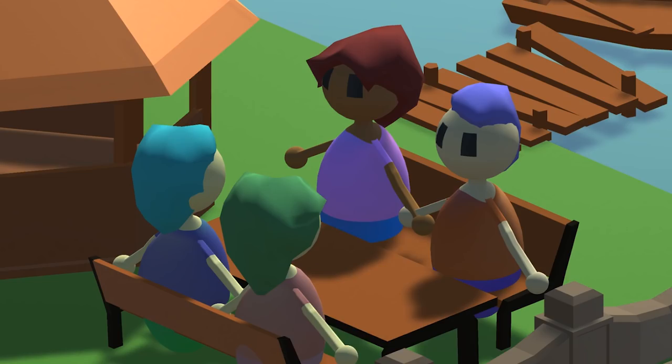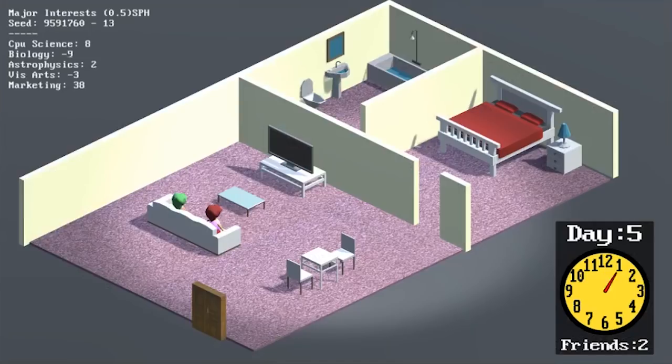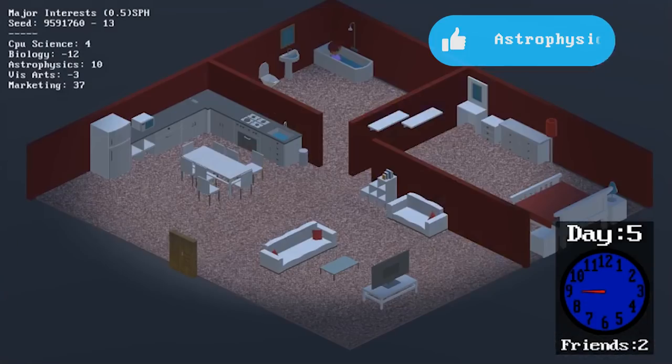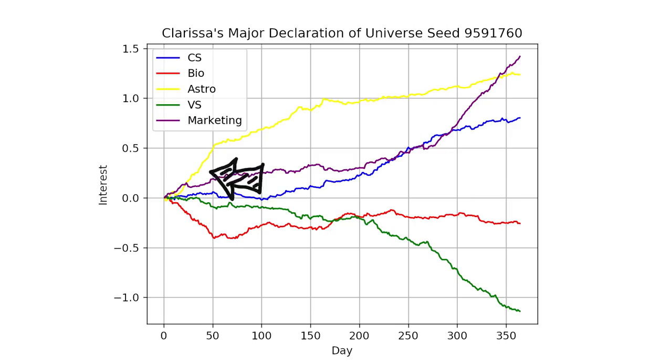Starting from the beginning, on day three, Clarissa met Ipilov at the park, and they instantly became good friends. They hung out a lot, even more so than Clarissa hung out with her mom. So Ipilov influenced her to declare astrophysics and stay away from biology, because that's what Ipilov was into. Which is why pretty early into the year, we can see astrophysics taking a dominant lead.